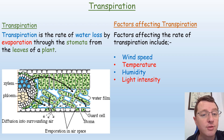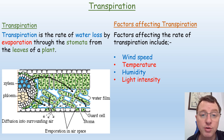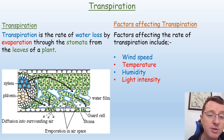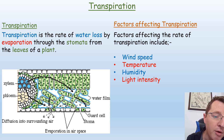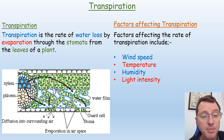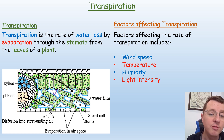Transpiration is the rate of water loss by evaporation through the stomata from the leaves of a plant. It's evaporation because the water is actually evaporating from the cells — where it's a liquid — into the air spaces, where it becomes a gas, a vapor, which can then leave through the stomata.